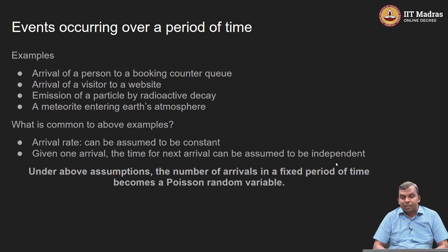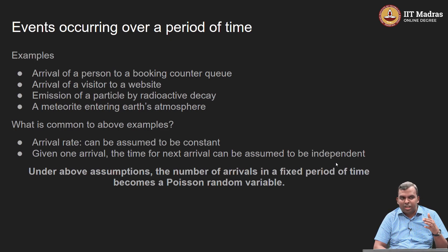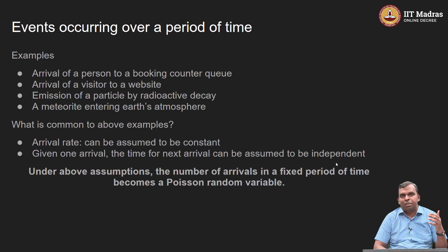It turns out that under these two assumptions — a fixed arrival rate and the time to the next event being independent of the past — if you fix a certain period of time and look at how many arrivals will happen, that count will be a Poisson random variable. This hopefully gives you a sense of why the Poisson random variable shows up all over the place. If you are tracking events over a period of time, they seem to occur randomly, their arrival rate is fixed, and the waiting time for the next arrival is independent of the past — under these scenarios, the number of arrivals over a period of time ends up being a Poisson random variable.